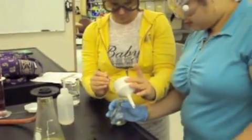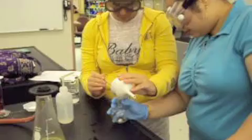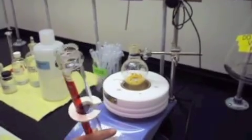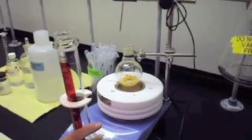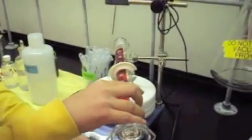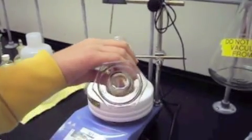After the vacuum filtration, we put the solid back into the round bottom flask. After returning the solid, we're adding 20 milliliters of 3 molar sodium hydroxide while stirring.